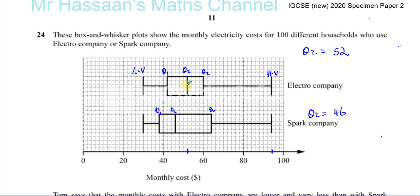The interquartile range gives us an idea of how spread out the data is. If the interquartile range is smaller, then the data varies less. If it's bigger, the data varies more. So we judge the variation not by the lowest and highest value, but by the interquartile range, which is Q3 minus Q1.